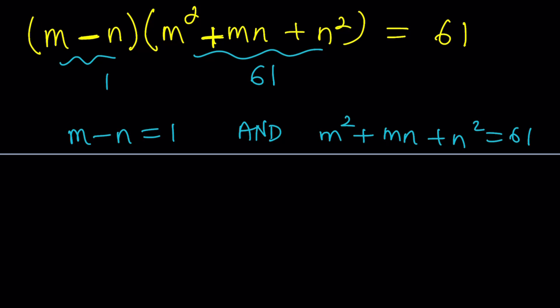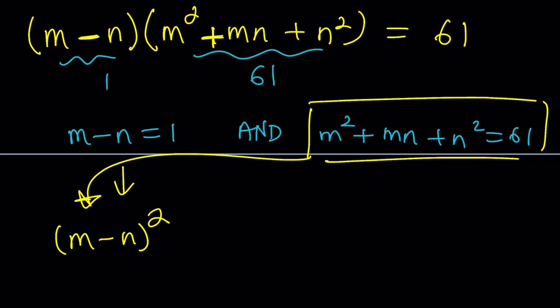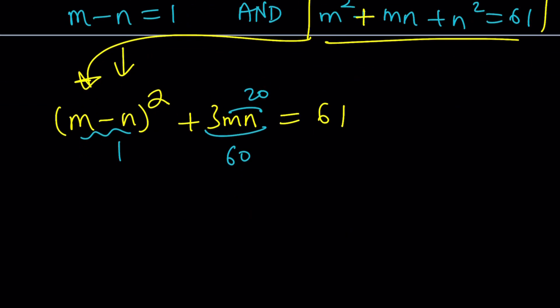This system is beautiful. If you were working with the real numbers, there would be infinitely many solutions that satisfy this. But in this case, it's a different story. How do I solve this system? Let's make the second equation nicer. I can write this as m minus n squared, which gives me m squared minus 2mn plus n squared. So I have to add 3mn to get plus m n. That's equal to 61. m minus n is equal to 1. So this leaves us with a 60, which means m n is equal to 20.